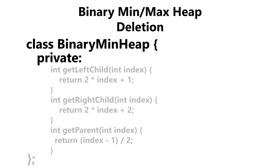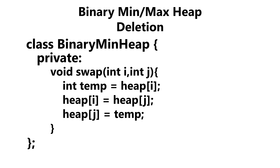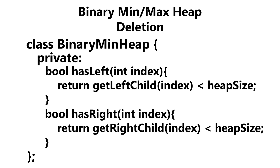We're going to have six helper methods. Our get left child method generates the left child index, our get right child method generates the right child index, and our get parent method gives us the parent index of the index we pass in. Our next method is a simple swap method — we take in two indices and swap the data between them, used when we heapify our tree. We also have has right and has left, which return true or false on whether a node has a left or right child.